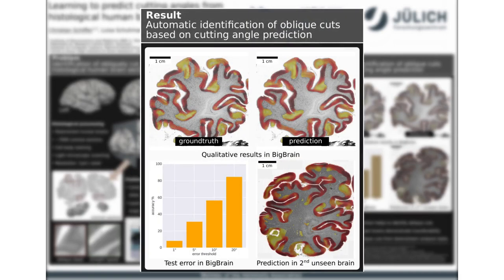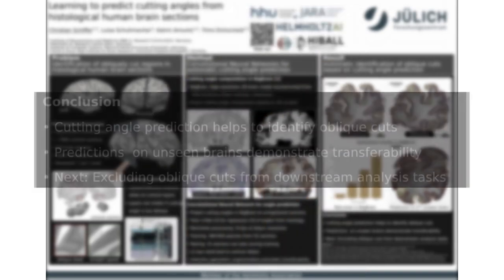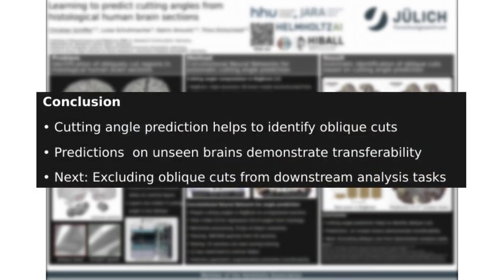Qualitative results on the BigBrain show that the model successfully identifies obliquely cut regions. Results on a second unseen brain further indicate that the model transfers well to new brains. In conclusion, we have shown that a convolutional neural network can be used to correctly predict cutting angles based on histological image data.